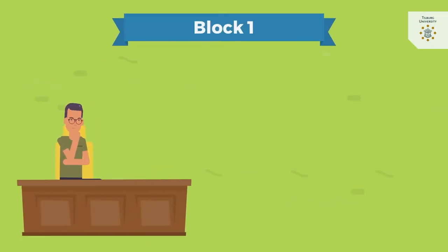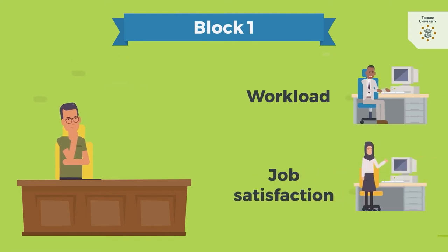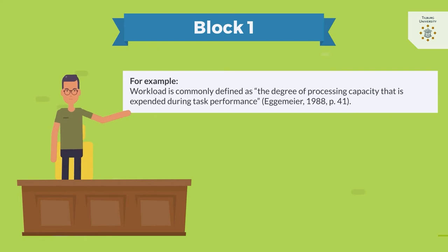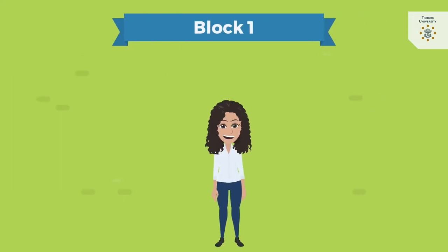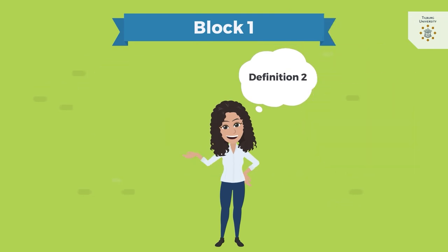The theoretical framework starts with providing a definition of your variables. In research, multiple definitions may exist of each variable and they may slightly differ from each other. So now is the time to present the definition you are using. Do not forget to properly cite the original author of this definition. Feel free to present multiple definitions, but if you do so, explain which one you will use and why.